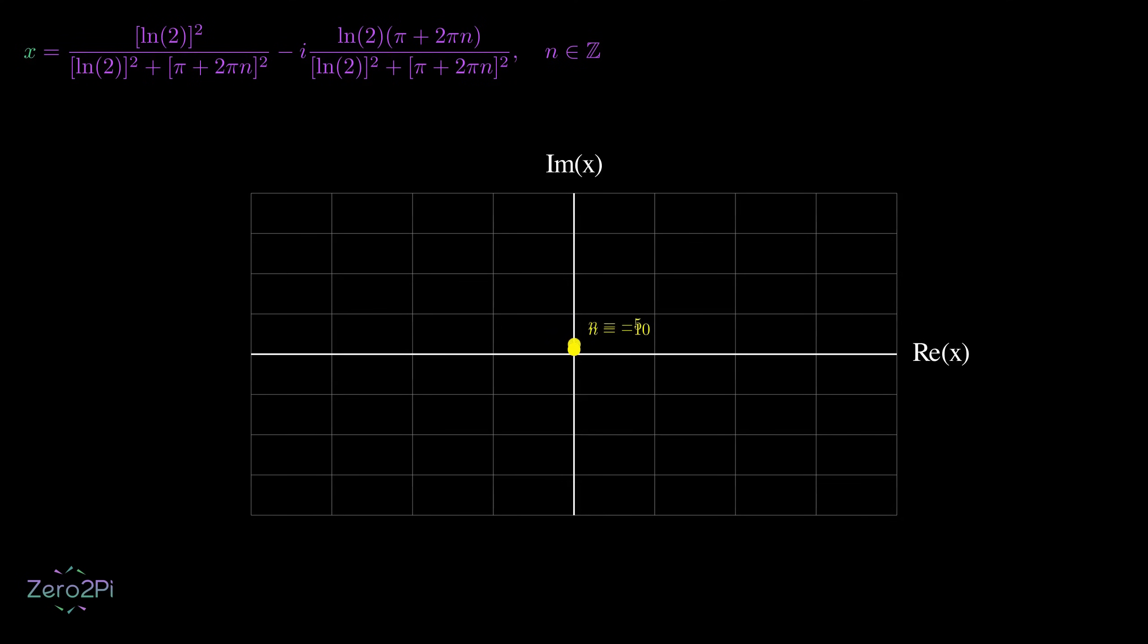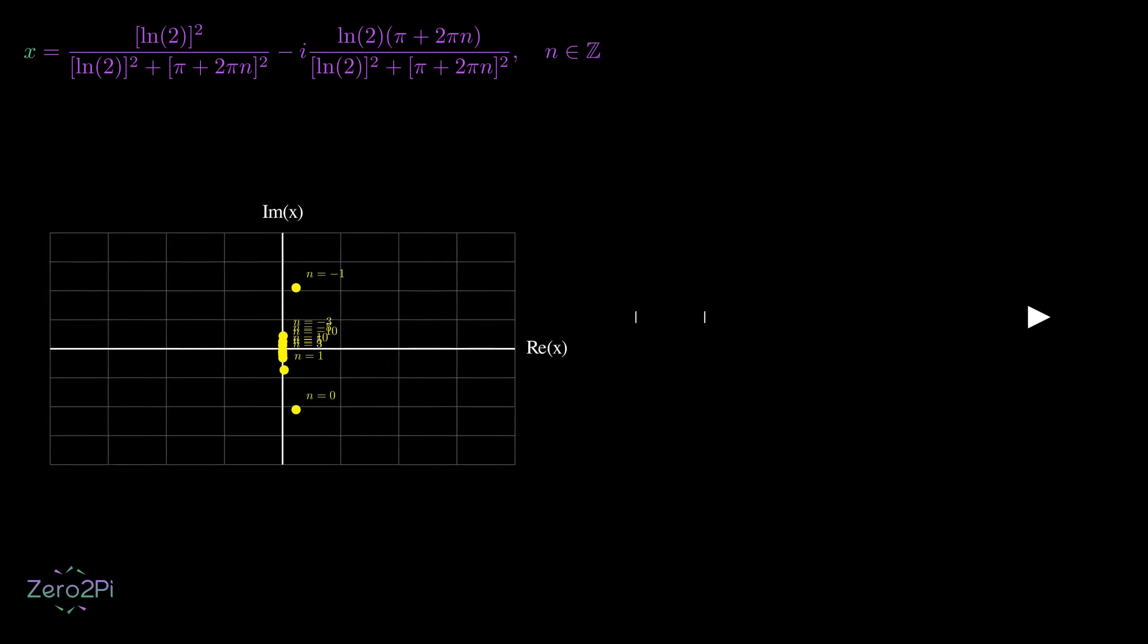So here we are plotting some of these solutions on the complex plane by taking different values of n. Each value of n gives us a unique, complex solution to our original equation.